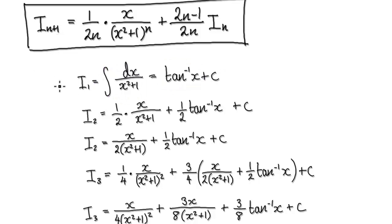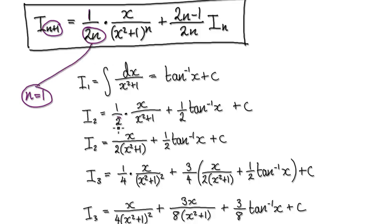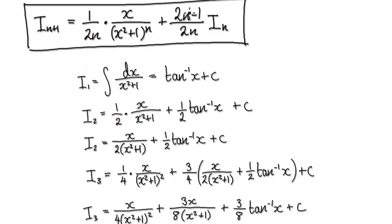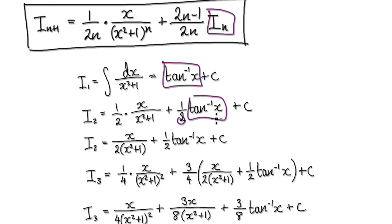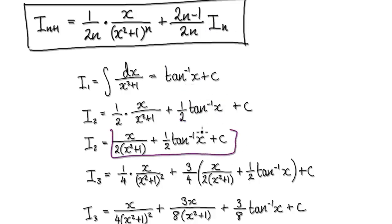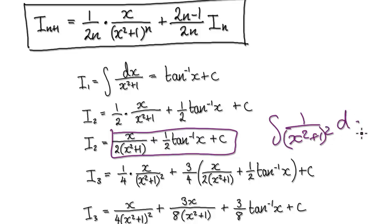Now that we know I_1, we can work out I_2. Remember, for I_1, n is 1. So for the next term, n plus 1, substituting n equals 1: the coefficient is 1 over 2 times 1, which is a half; the power on the bracket is 1; the index 2n minus 1 is 1; and 2n is 2. With I_n being arctan(x), tidying up gives us I_2.